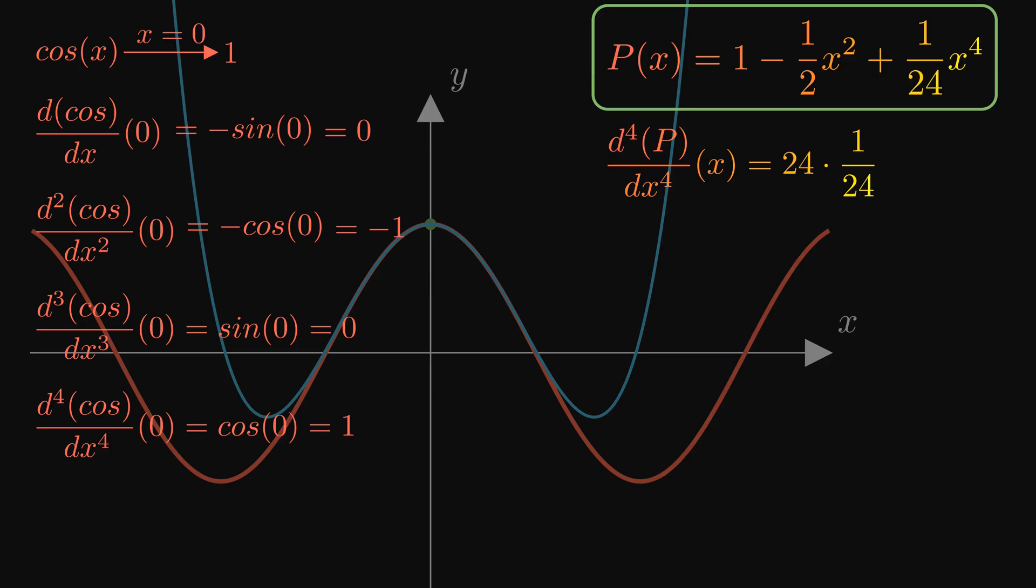Now to fully understand what's going on and to write the general form of the Taylor series, let's recall what we've done. Our goal was to find a polynomial that resembles cosine x as closely as possible at x equals 0. Cosine at 0 equals 1, so our polynomial should also pass through the point 1, and at this stage, the polynomial looks like this.